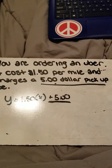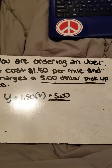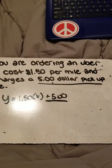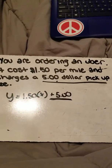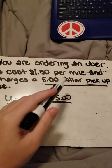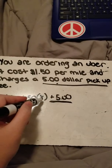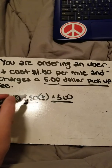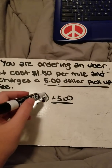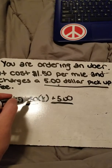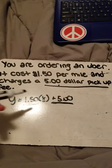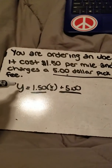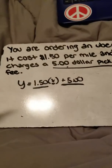It's a dollar fifty per mile. These questions are usually worded as 'per mile,' 'per minute,' 'per month,' or 'per week' — a time frame or span of distance. So for every mile I go, I have to pay a dollar fifty. However many miles I go, it's going to be that number times a dollar fifty, because multiplication is repeated addition.